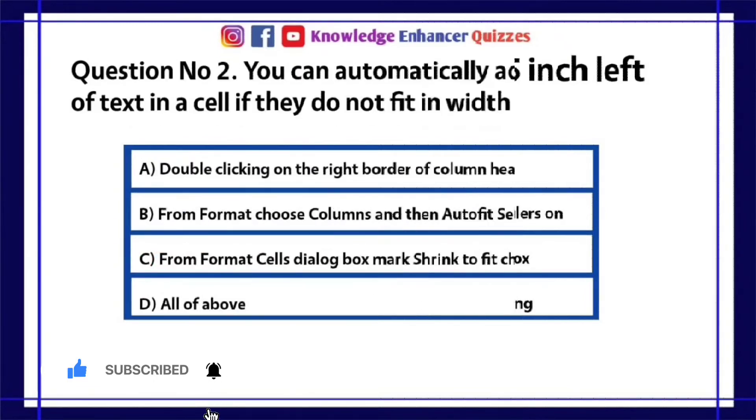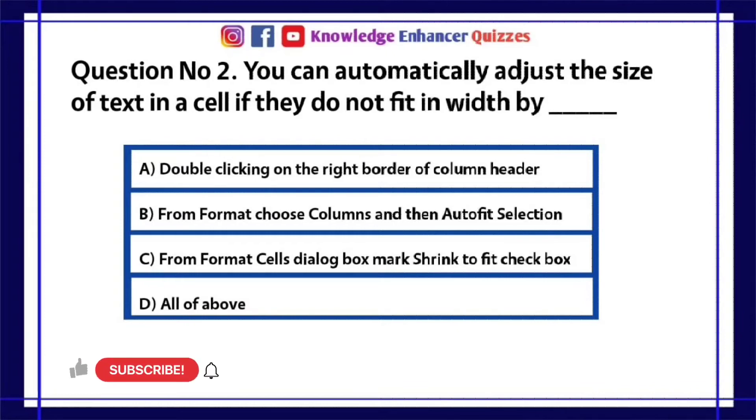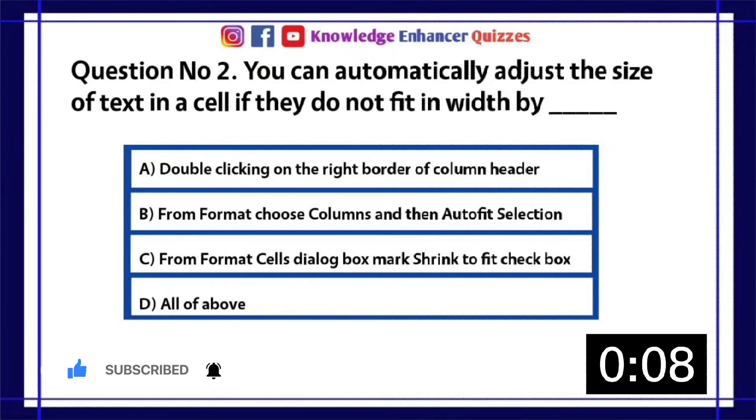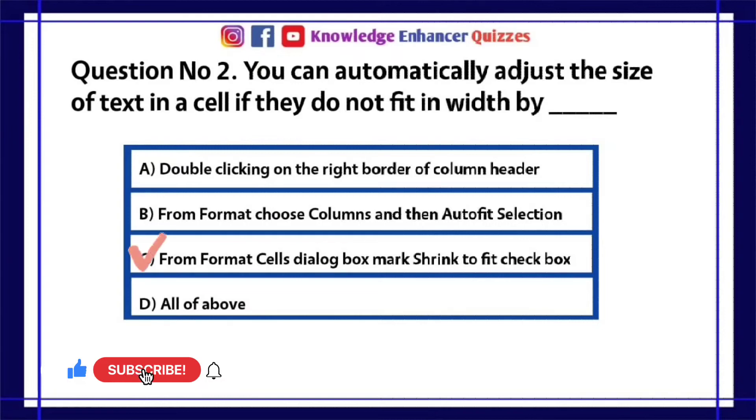Question number 2. You can automatically adjust the size of text in a cell if they do not fit in width by: A. Double-clicking on the right border of column header. B. From format choose columns and then auto-fit selection. C. From format cells dialog box mark shrink to fit checkbox. D. All of above. Option C is the right answer.